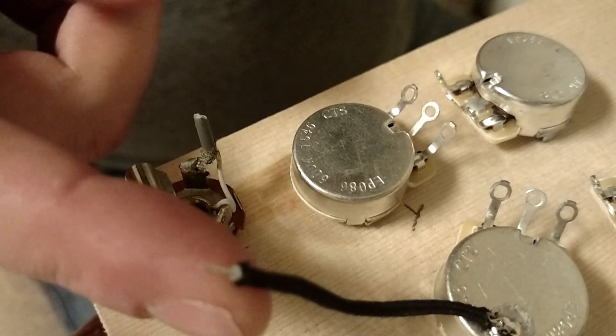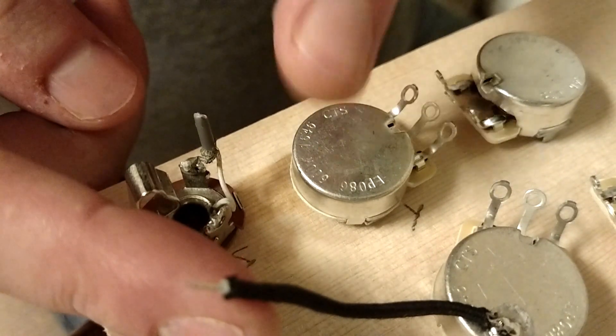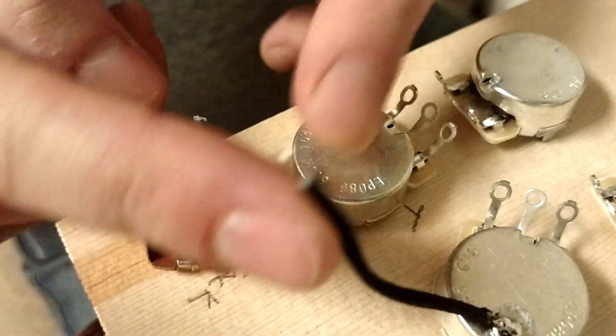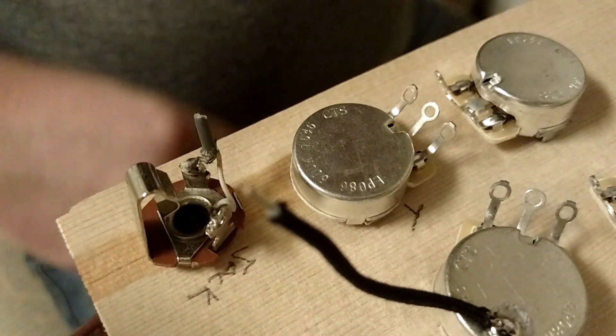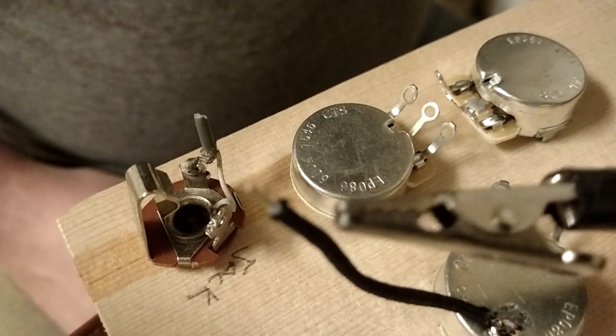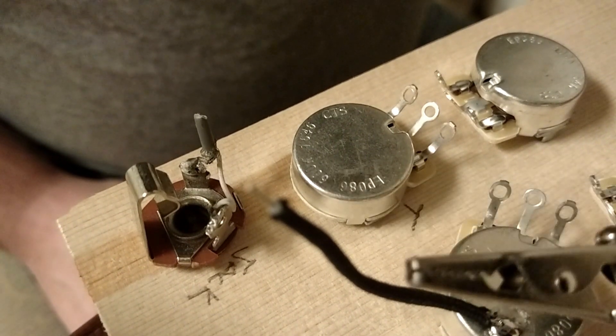First, we're going to tin the actual pot with the iron and some solder, and then we're going to tin the tip of this, and it should work out great. I also have, if you want to make one of these, it's very easy.